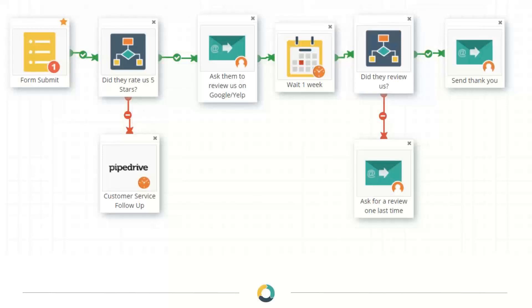We'd want to follow up with unhappy customers and try to find out what we can do to help. This notification could be an email, a text message, or however you need to notify that internal person. If they rated us five stars, we treat them differently — we email them and ask them to review us on Google or Yelp. The email can be customized to come from the salesperson, account manager, or a generic company email. After that, we wait one week and then check if they reviewed us.